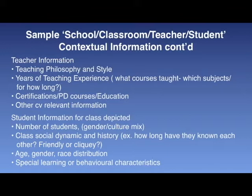Student information for the class depicted might include number of students, their gender, their cultural mix, the class social dynamic and history — in other words, how long have they known each other, are they friendly or are they cliquey? Other information: age, gender, race distribution, special learning and/or behavioral characteristics of the group or individuals within the group, etc. So I hope you get a sense of the kind of information that should be included on page 2 of a PBLO.